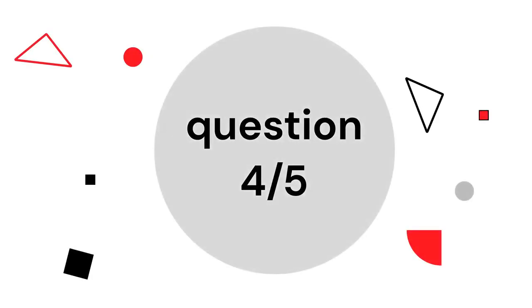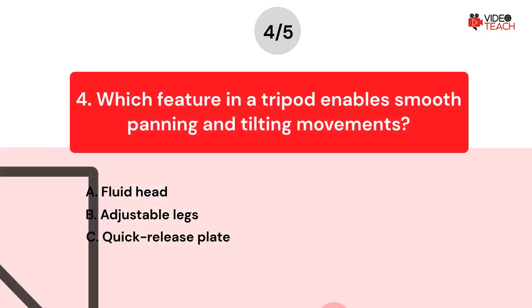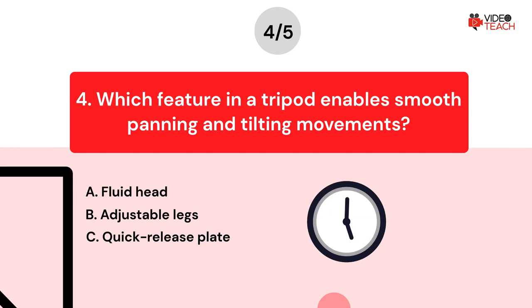Question number four. Which feature in a tripod enables smooth panning and tilting movements? Option A: Fluid head. Option B: Adjustable legs. Option C: Quick release plate. Now you have about 15 seconds to think about your answer.